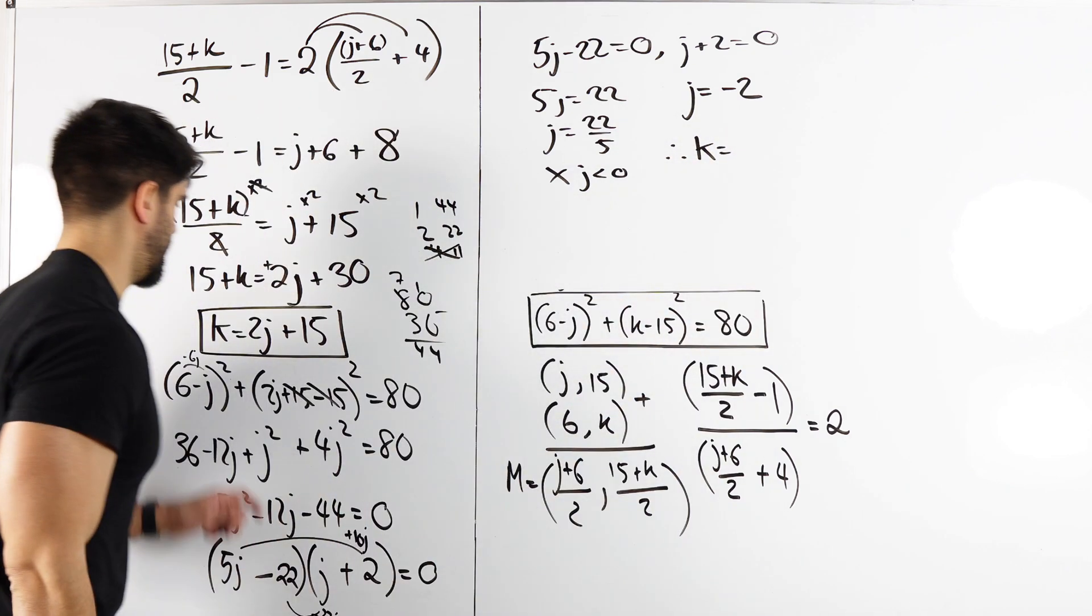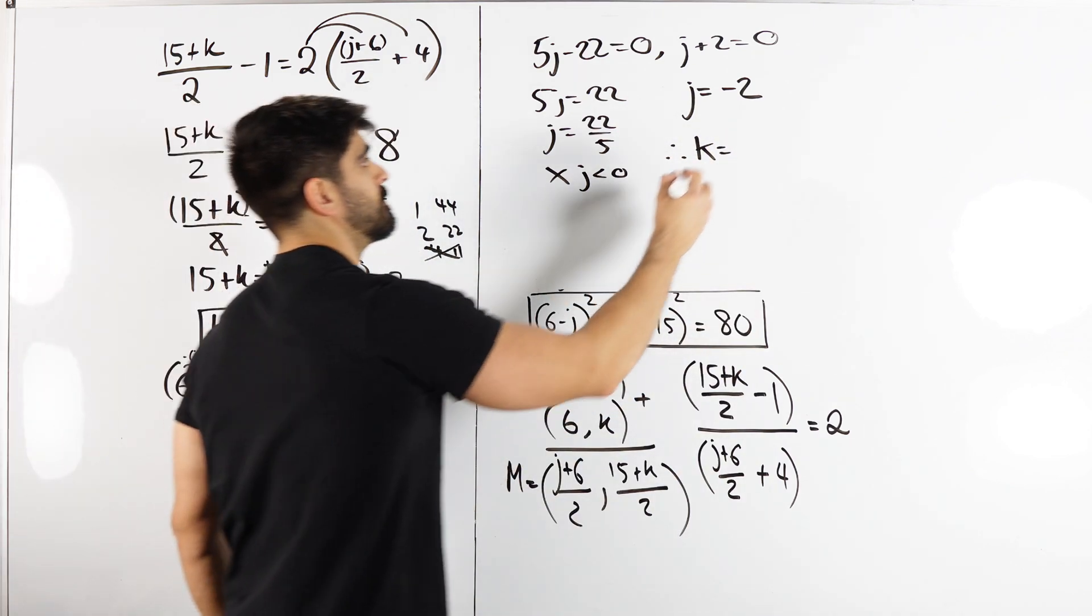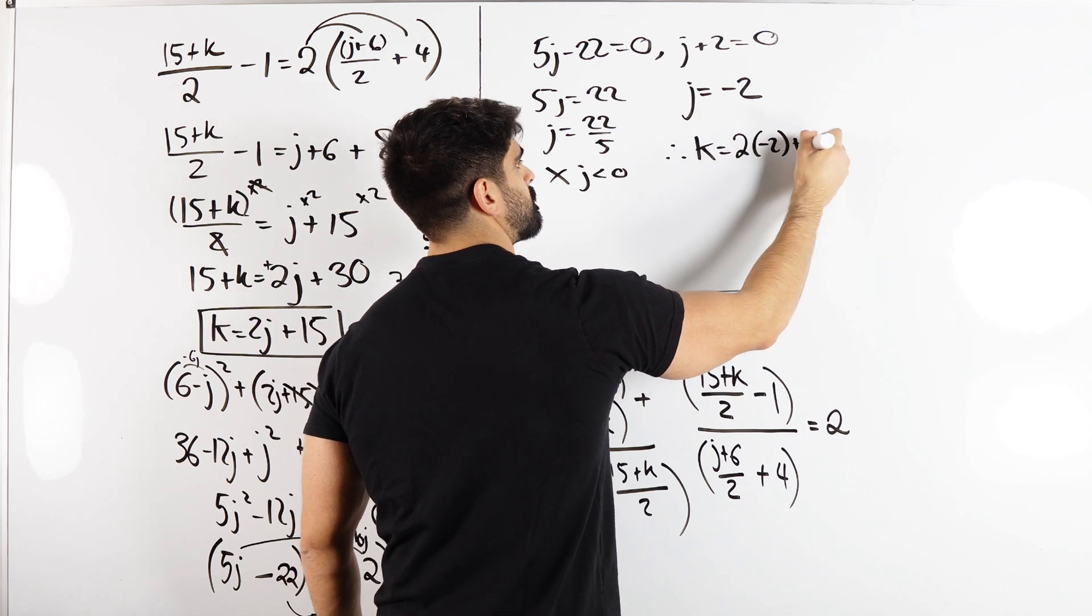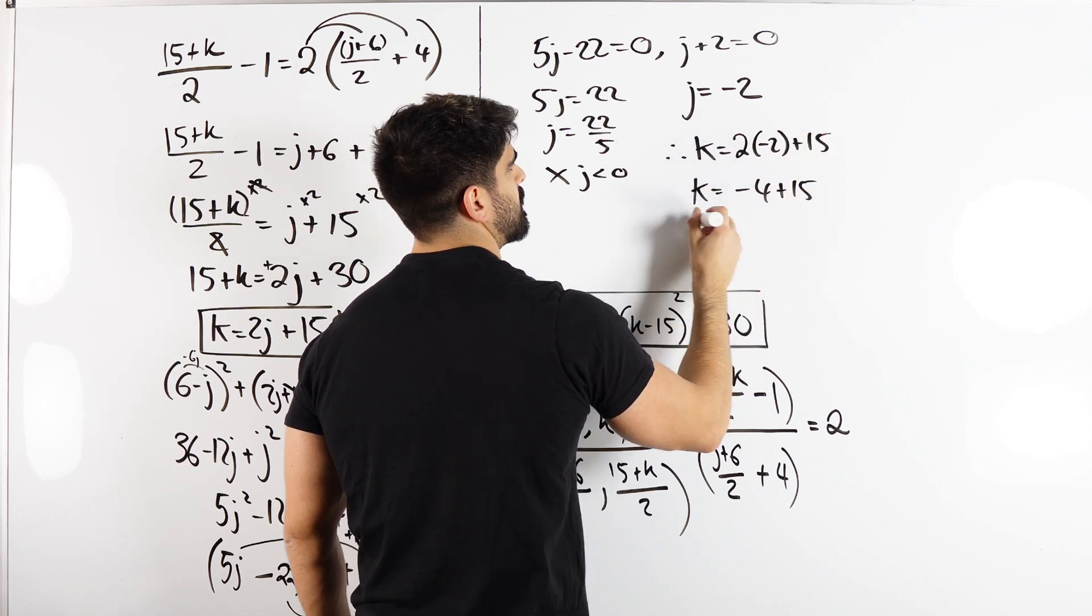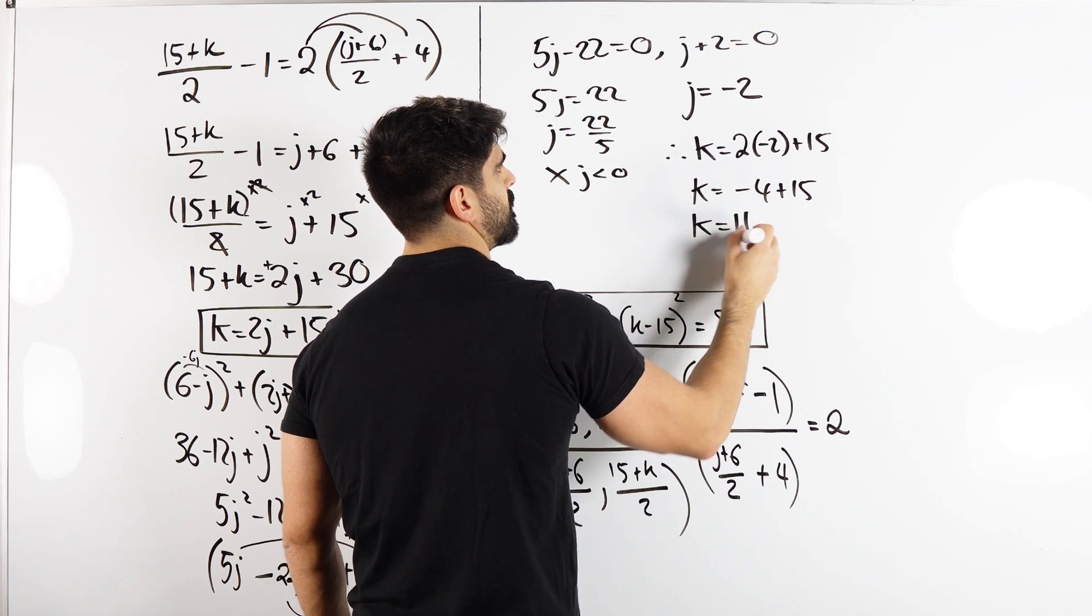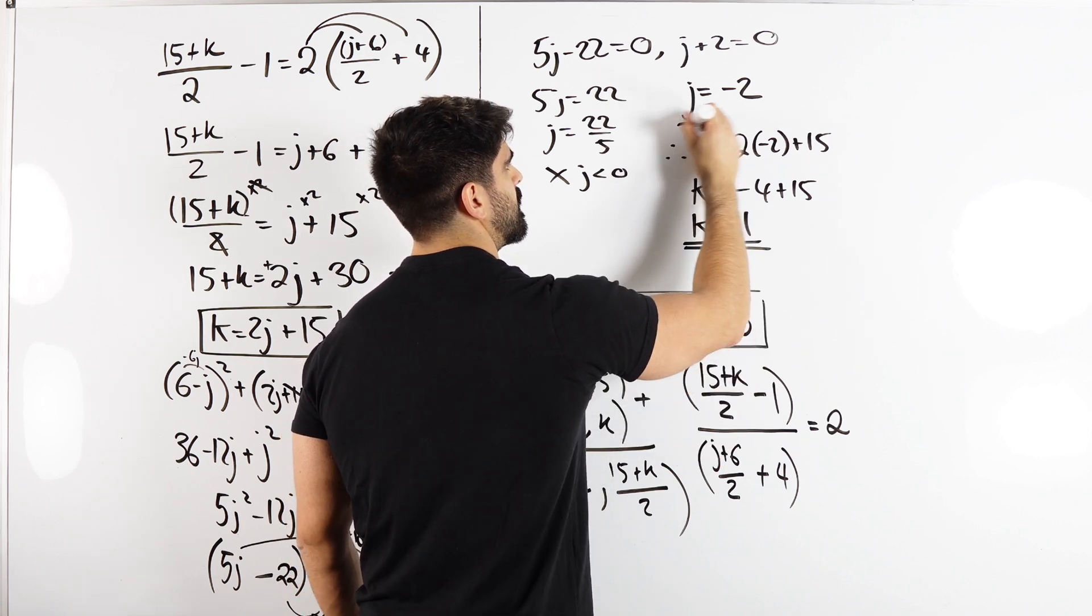And now we can get K by subbing into here, 2J+15. So yeah, -4 plus 15. K is 11. And that is your solution.